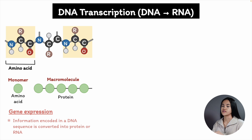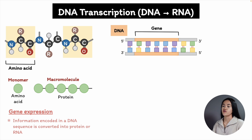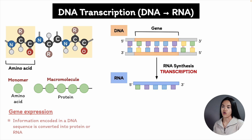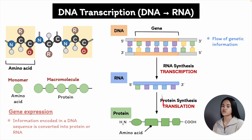The information encoded in a DNA sequence is converted into either a protein or just RNA. When a particular protein is needed by the cell, the nucleotide sequence of a gene — the basic unit of inheritance, which is the segment of DNA that contains instructions for making a particular protein — is first copied into RNA, or ribonucleic acid. Genes are the segments of DNA that are transcribed into RNA, and the RNA copies are then used to direct protein synthesis. Thousands of these conversions occur every second in each cell of your body, so the flow of genetic information is from DNA to RNA to protein, and all cells express their genetic information in this way.